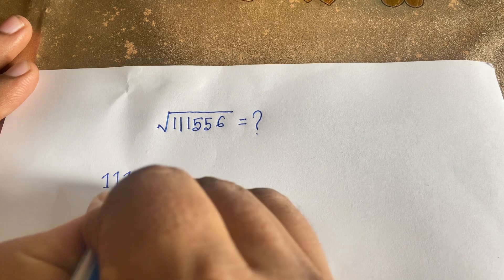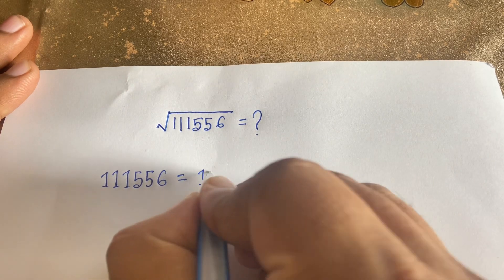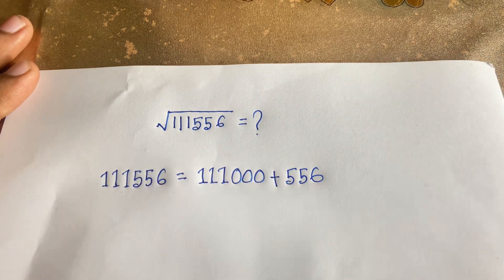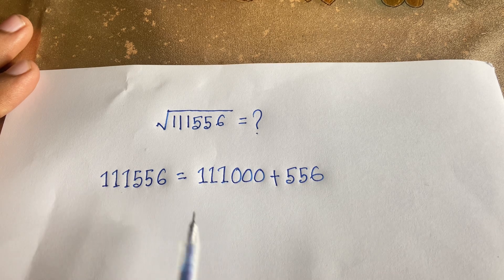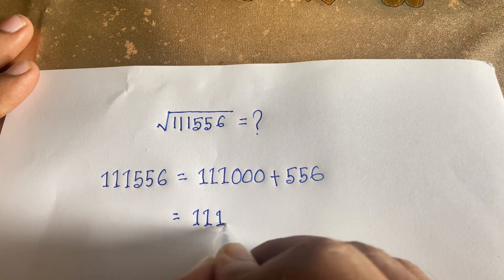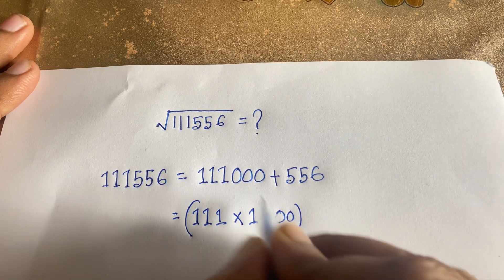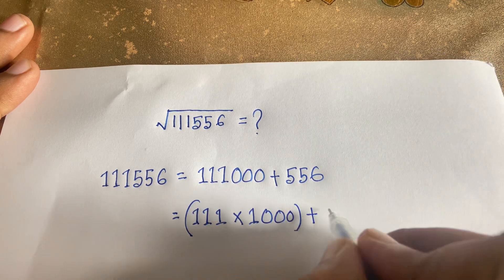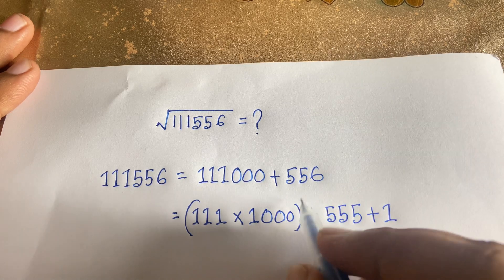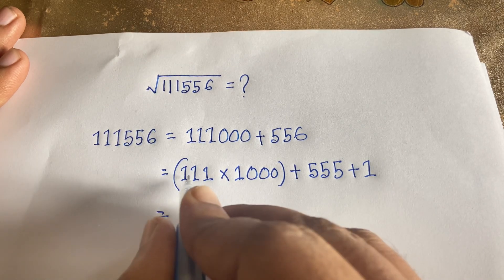I can see that 111556 equals 111000 plus 556. Now I can see that 111 times 1000 gives us 111000. And 555 plus 1 equals 556. So we have broken the number into these two parts.